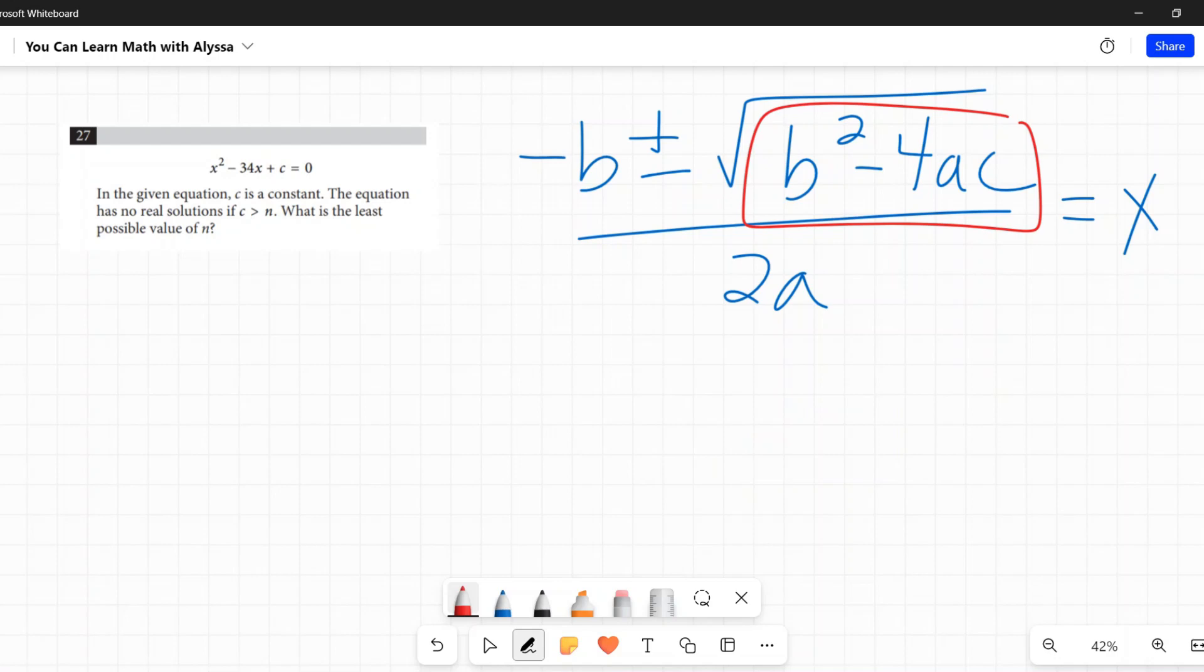...less than zero, then the quadratic has no real solutions. If it is greater than zero, it has up to two real solutions, but we're not worried about that at this point. We're saying no real solutions, so we are only worried about if that b² - 4ac is less than zero.